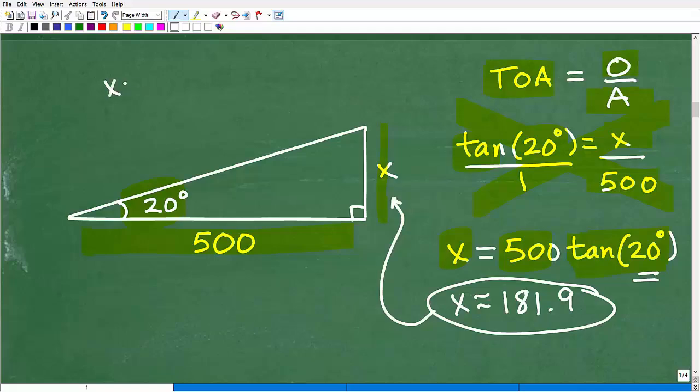But what does that represent? Well, X was the height of the building. So the building is 181.9 feet approximately. There's a few other decimals we can kind of round up. And that's it. So this is an illustration of basic trigonometry, basic right-angle trigonometry.